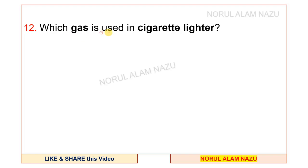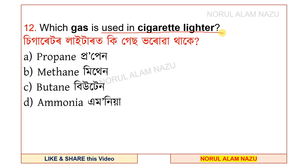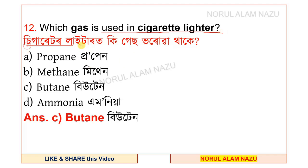Which gas is used in a cigarette lighter? The answer is butane gas.